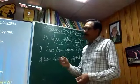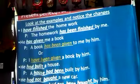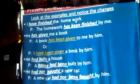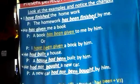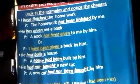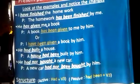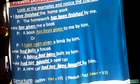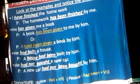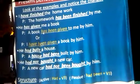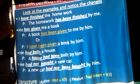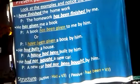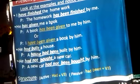Let's watch some slides for more understanding. First sentence: 'I have finished the homework' → 'The homework has been finished by me.' 'Have finished' changes to 'has been finished.' Similarly, 'He has given me a book' has a double object — me and a book. Changing from the second object: 'A book has been given to me by him.'